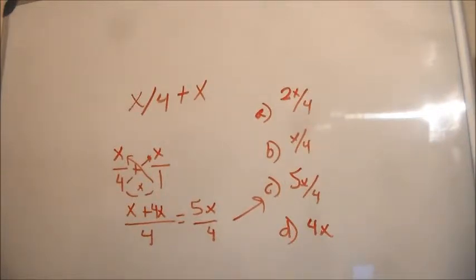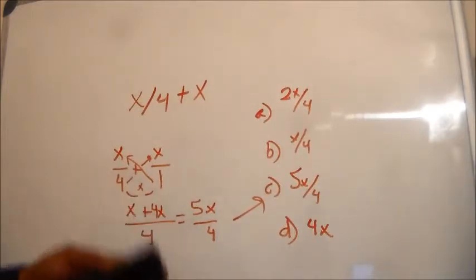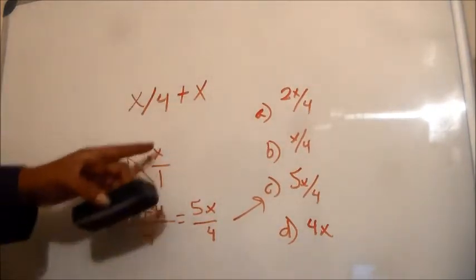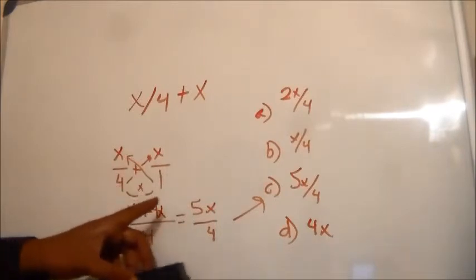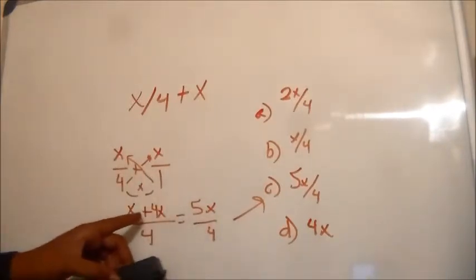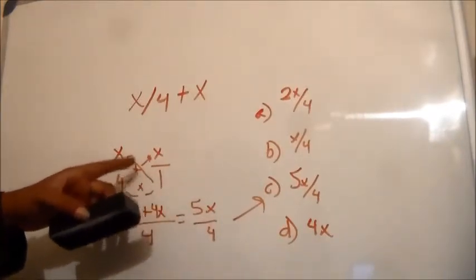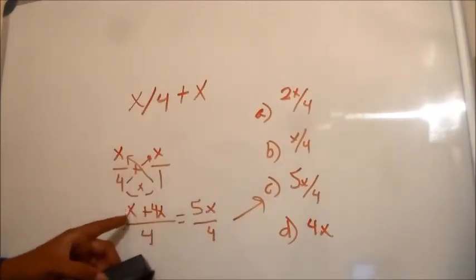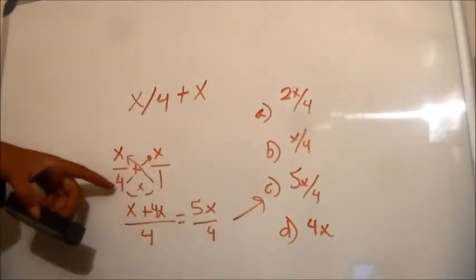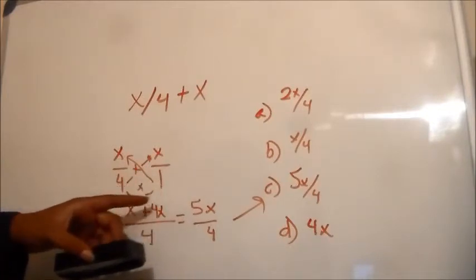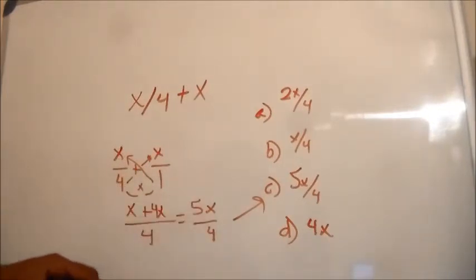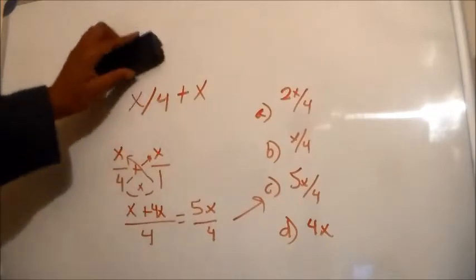This is my method of executing these fractions — cross multiplication: 1 times X plus 4 times X, giving 1X plus 4X over the product of 4 times 1 which is 4, and that's our answer: 5X over 4.